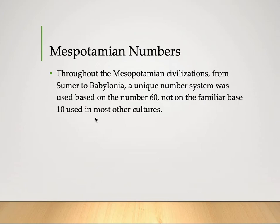From Sumer to Babylonia, a unique number system was used based on the number 60. Unlike the Egyptians who used base 10 — that is, decimal — they used base 60, not the familiar base 10 used in many other cultures. If base 10 is decimal, base 60 is what we call sexagesimal.